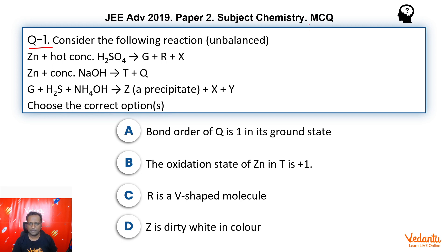Now this is a multiple correct type question, looks like it talks about zinc. So zinc with hot concentrated H2SO4 giving us some compounds, zinc with concentrated NaOH giving us some compounds.